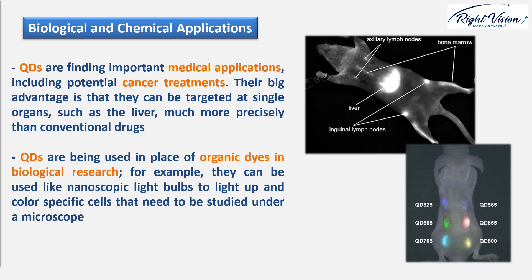Quantum dots are also being used in place of organic dyes in biological research. For example, they can be used like nanoscopic light bulbs to light up and color specific cells that need to be studied under a microscope. They are also being tested as sensors for chemical and biological warfare agents. Unlike organic dyes, which operate over a limited range of colors and degrade relatively quickly, quantum dots are very bright and can be made to produce any color of visible light. That's the end of the quantum dot lesson — see you in the next one!